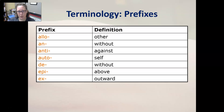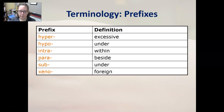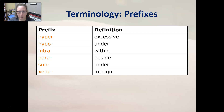Let's go over some of the prefixes. Allo- means other, like an allograft — a graft from another person. A- and an- are both without. Anti- is against. Auto- means itself — again, with autograft, that would be grafting skin from one part of your body to another part of your body, but from the same person. Epi- is above, ex- is outward, hyper- is excessive, and hypo- is under or not enough.